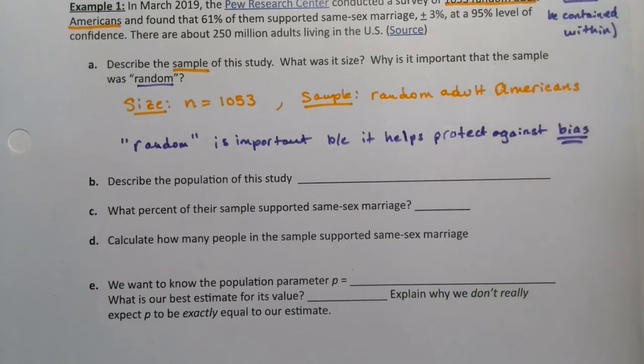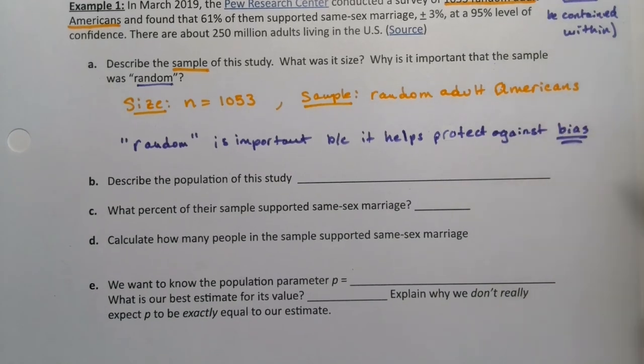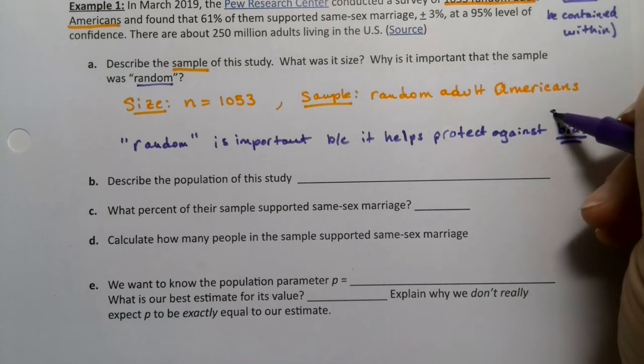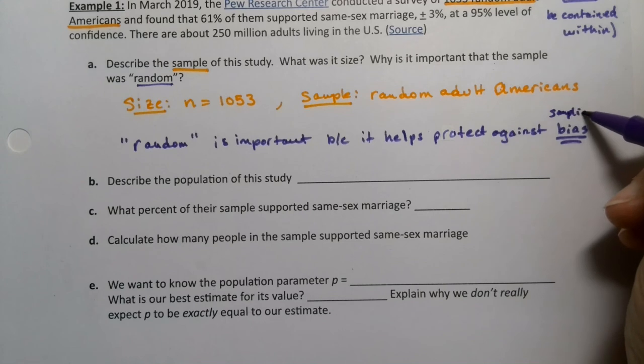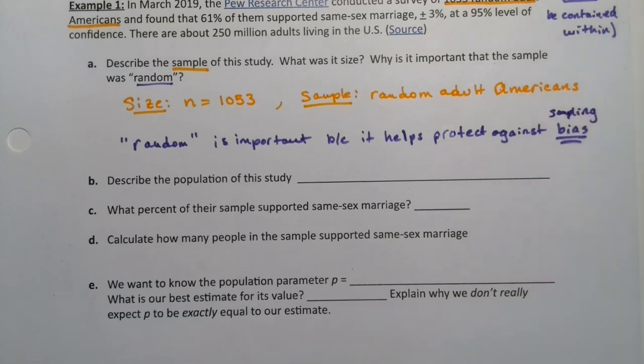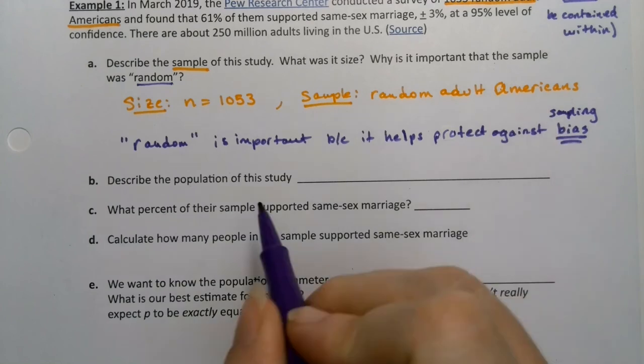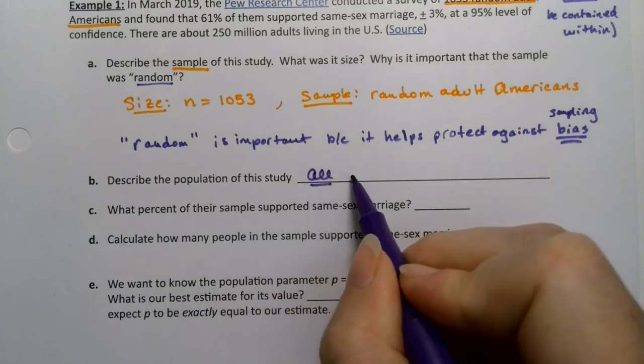If you're thinking about the three types of bias we have, sampling bias, response bias, and non-response bias, you're protecting really against sampling bias there. Now, what would be the population? That would be all adult Americans, because your sample was random adult Americans.